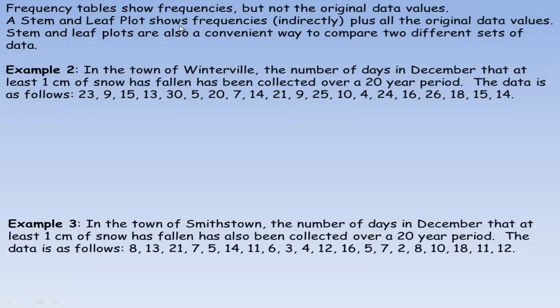A stem and leaf plot is one way to display the data. It shows the frequencies indirectly, but also shows all the original data values. Stem and leaf plots are a convenient way to compare two different sets of data. In example two, in the town of Winterville, the number of days in December that at least one centimeter of snow has fallen has been collected over a 20 year period. This 23 means in that year there were 23 days in December that at least one centimeter of snow fell.